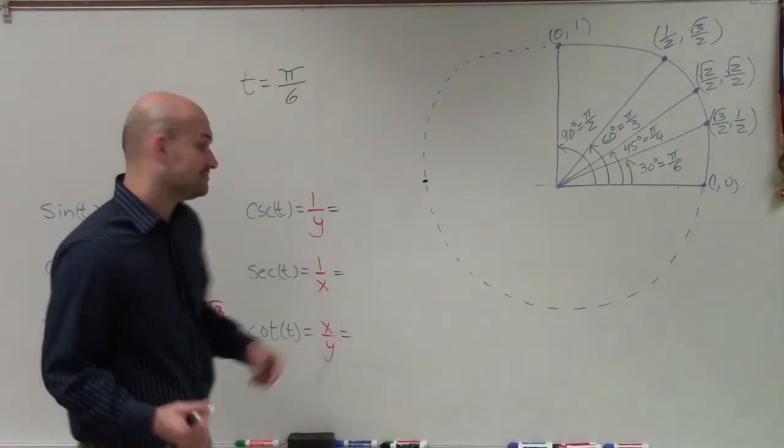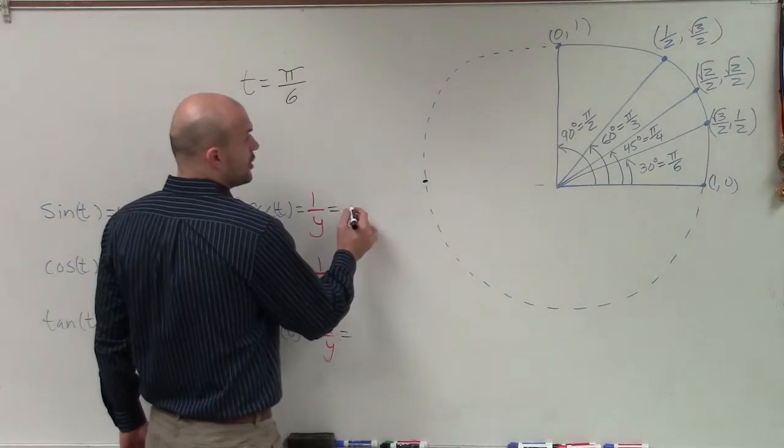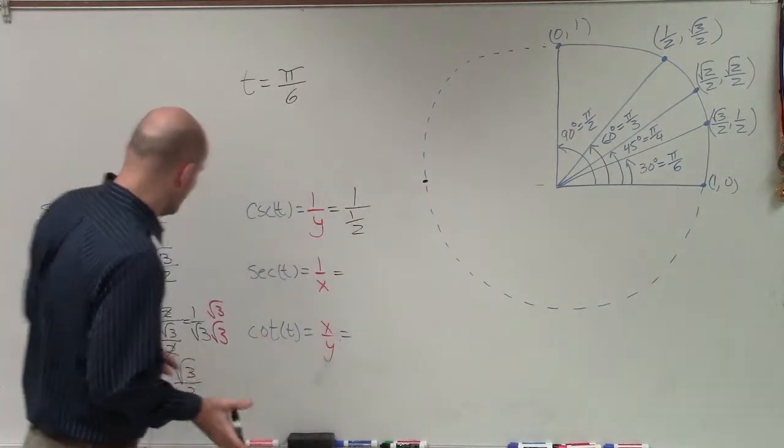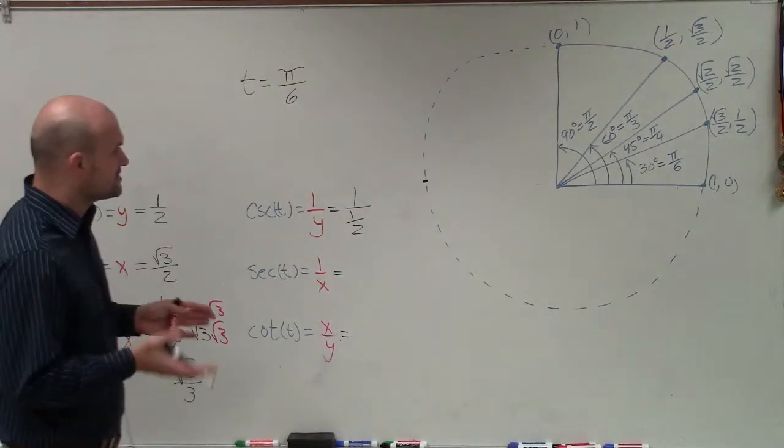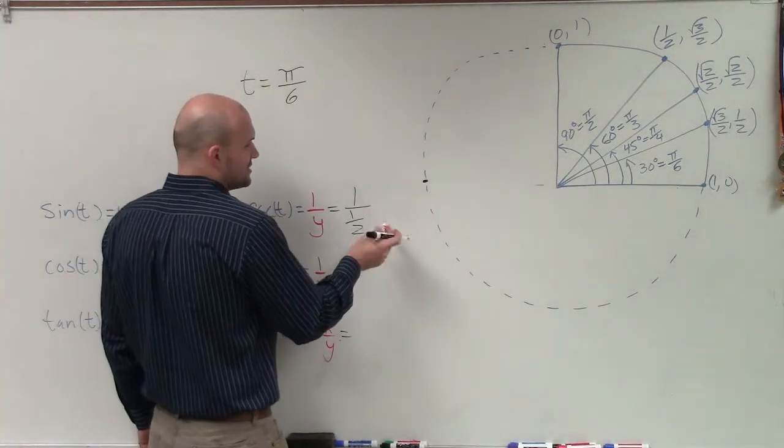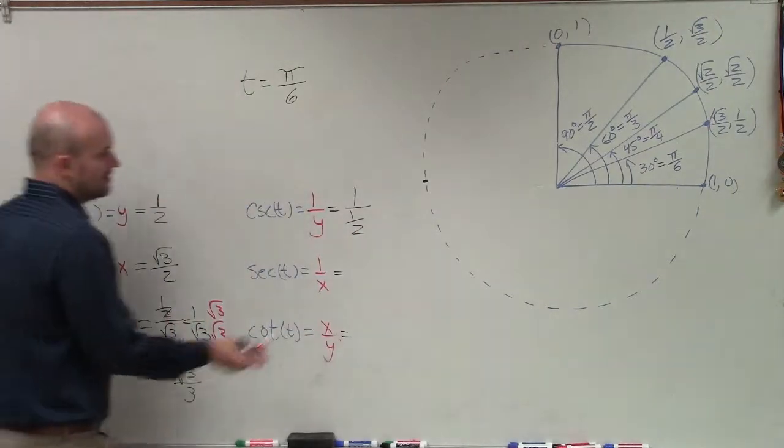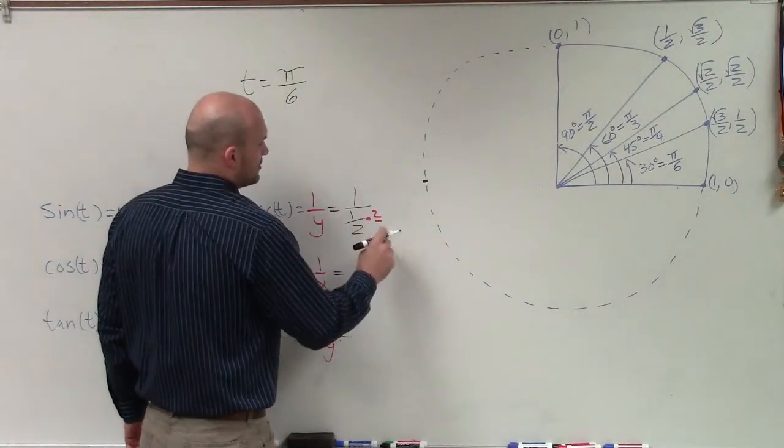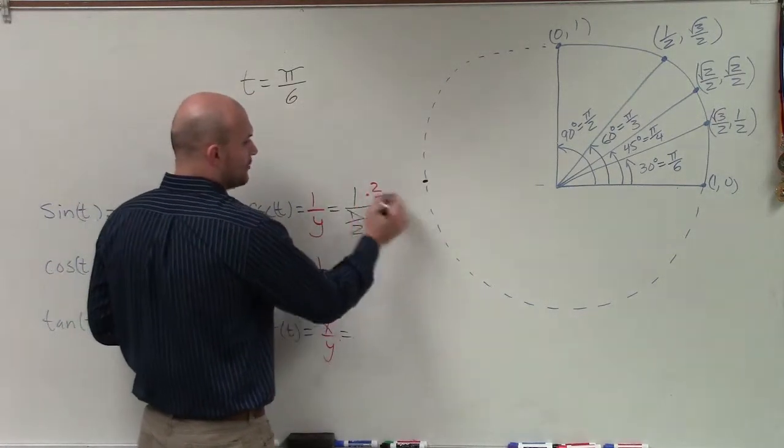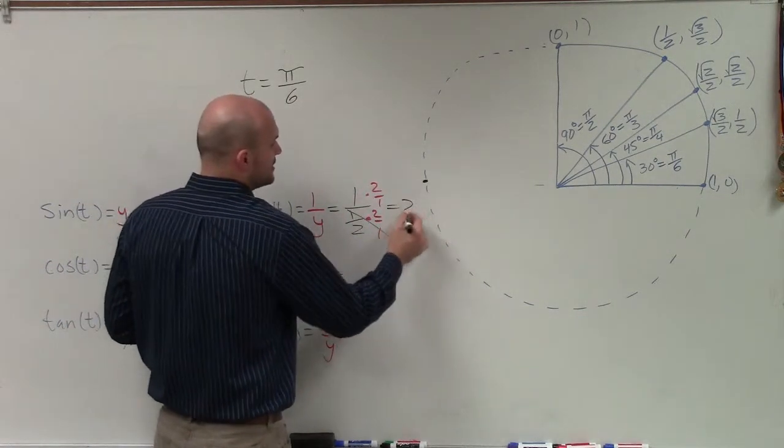When dealing with the cosecant, that's going to be my 1 over my y, which is 1 over 1 half. And again, you can still simplify this and get it to 2. But one thing I want you guys to always understand is I could have done that over here, but just multiply by the reciprocal. Whenever you're multiplying your denominator by your reciprocal, that multiplies out to 1. 1 times 2 over 1 is just going to be 2.